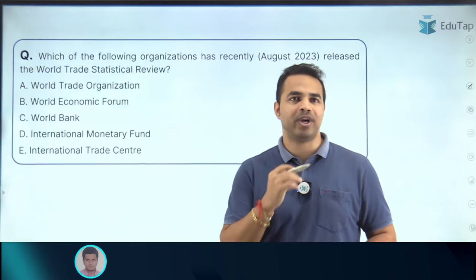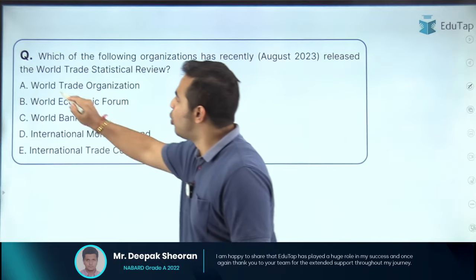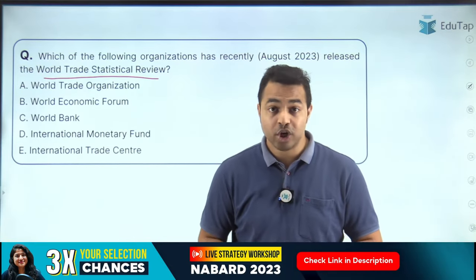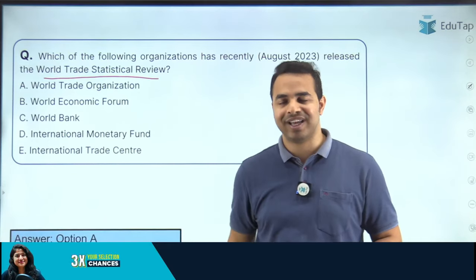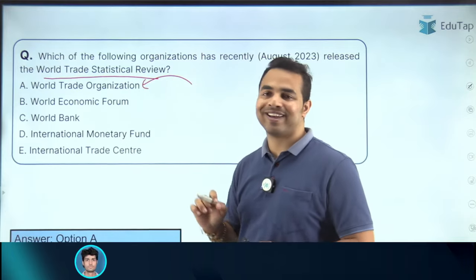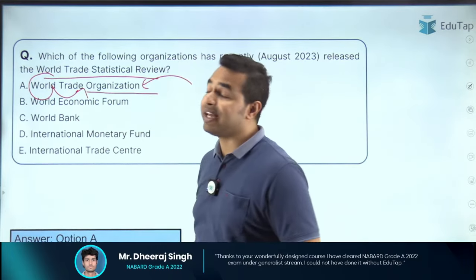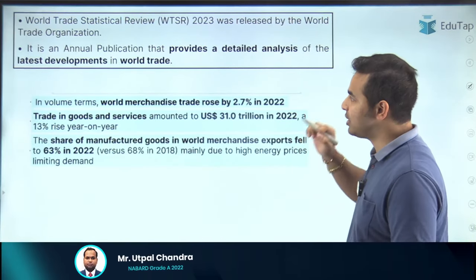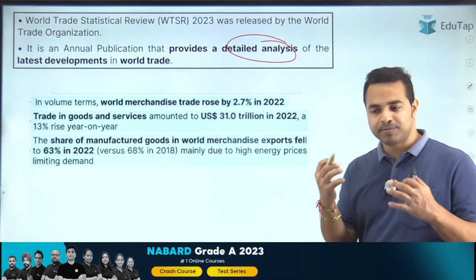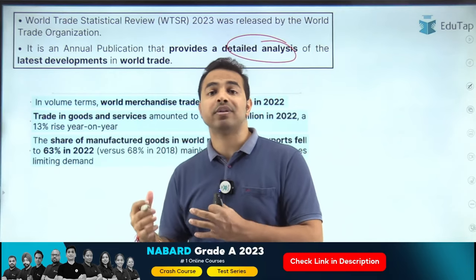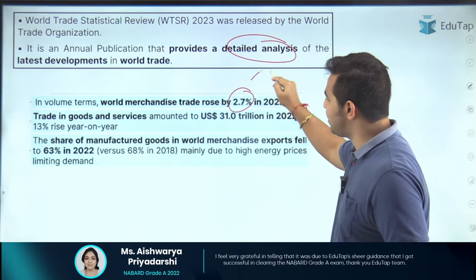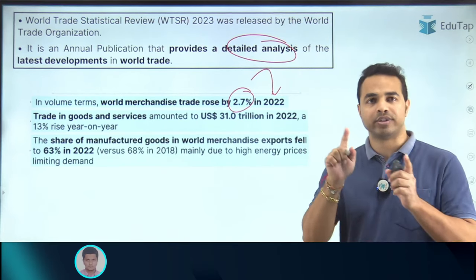The next important report is the World Trade Statistical Review. When we talk about trade, the organization responsible for trade practices across the world is the World Trade Organization (WTO), which releases this report. This report provides detailed analysis of the latest developments in world trade and gives data on top exporters and importers in both merchandise trade and commercial services. Merchandise trade increased by 2.7% in 2022.